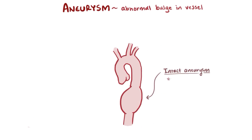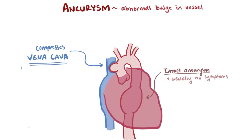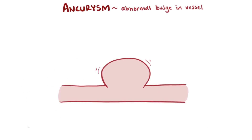Intact aneurysms are usually okay and don't cause any symptoms — although the bulging blood vessel can compress organs or vessels around it. For example, if an aneurysm compresses a major vein like the inferior or superior vena cava, it could decrease the amount of blood returning to the heart. Usually though, the big worry with aneurysms is the possibility that they might rupture.